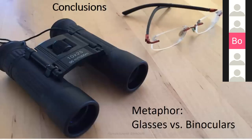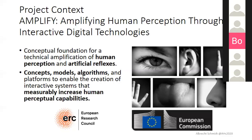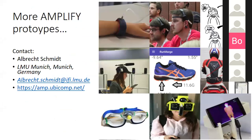To conclude, we are moving away from using binoculars for everything towards a system like glasses that constantly provides this type of amplification without the user really noticing it — with the input side being one of the big challenges. This work is done in the context of the European ERC project Amplify, which looks at human perception and how we can amplify it towards building artificial reflexes. If you're interested, visit amp.ubicom.net for other prototypes and projects.